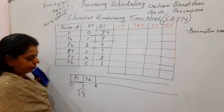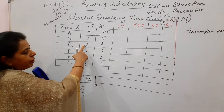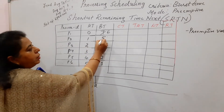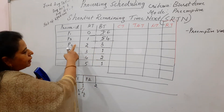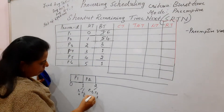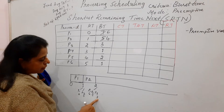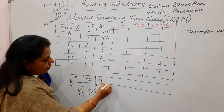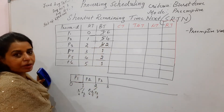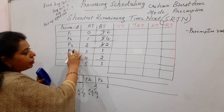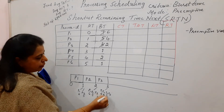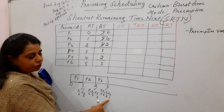Schedule P2 for 1 unit of time; its remaining burst time becomes 4. At time 2, P3 has arrived with burst time 3. The pending values are: P1 = 6, P2 = 4, P3 = 3. The lowest is P3, so schedule P3 for 1 unit; its remaining becomes 2. At time 3, P4 arrives with burst time 1. Out of P1(6), P2(4), P3(2), P4(1), the lowest is P4, so P4 gets its turn.